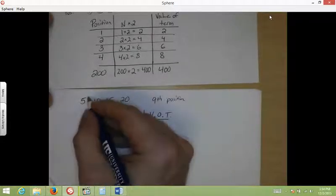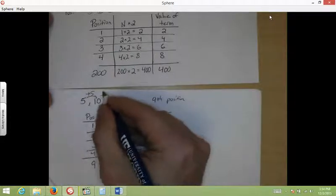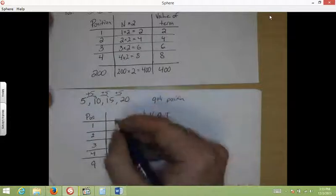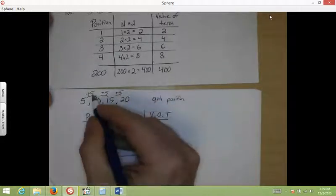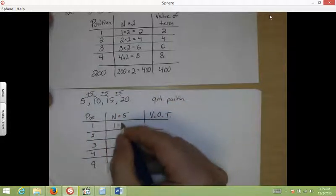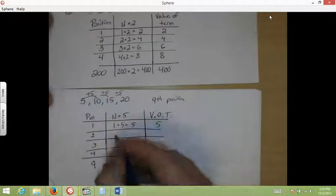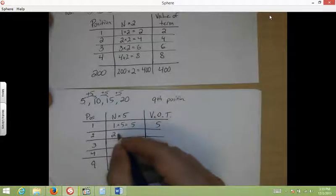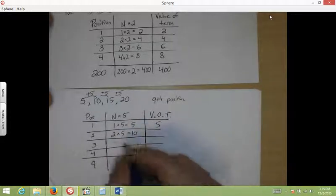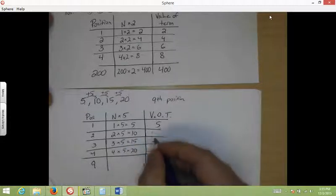So, to go from here to here, I'm adding 5. From here to here, adding 5. Here to here, adding 5. So I'm going to take my position number, and I'm going to multiply it by 5. So let's see. First position, 1 times 5 equals 5. And that's what we had for the first position. Position 2, 2 times 5 equals 10. Position 3, 3 times 5 equals 15. Position 4, 4 times 5 equals 20.